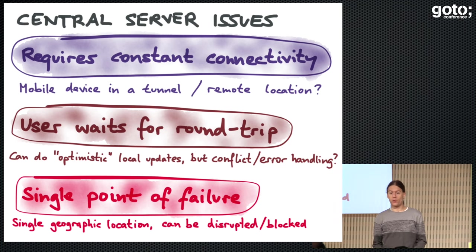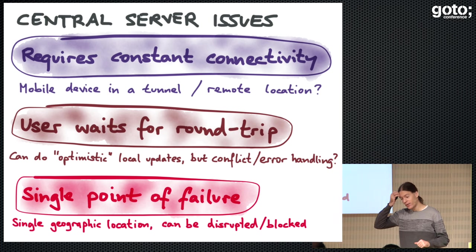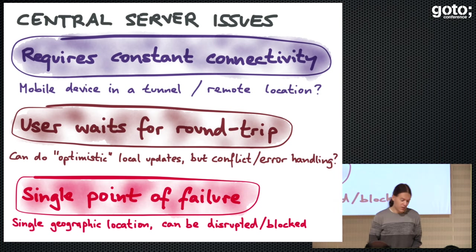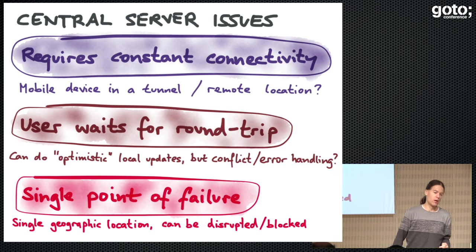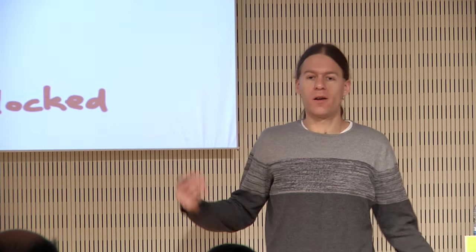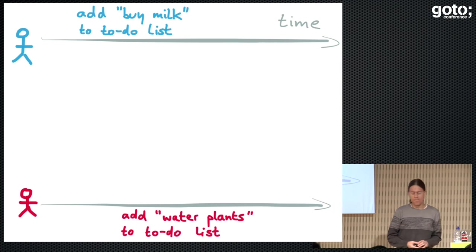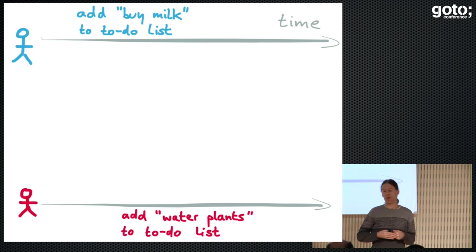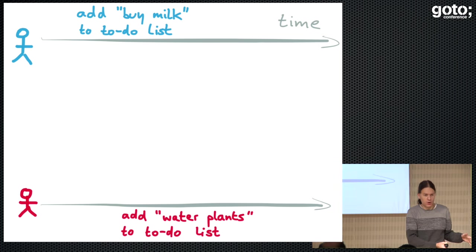A final problem with putting everything on a central server is that there's a single point of failure. People make fun of GitHub every time it goes down, saying: 'We've got this nice decentralized version control system, and what do we do? We put everything back in a centralized service.' This can be disrupted by denial of service attacks, or blocked in countries without free internet access. So what we'd like to do is figure out how to not have these problems of the single central server, but also not have to do merges by hand.